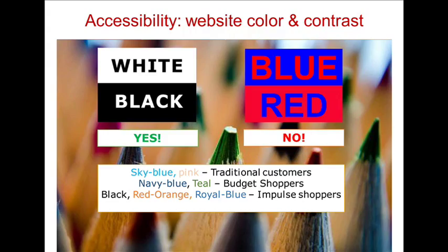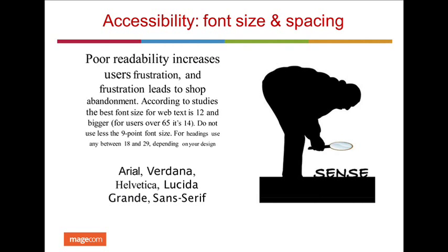Color is a very useful tool if you know how to use it. For instance, marketing researchers proved that color increases brand recognition by 80%. Different colors attract specific types of shoppers: sky blue and pink attract traditional shoppers; navy blue and teal attract budget shoppers; black, orange, and royal blue attract impulse shoppers. Proper font size and spacing are also important — poor readability increases user frustration, and frustration leads to shop abandonment.